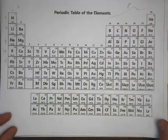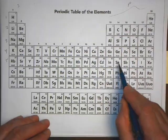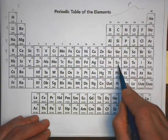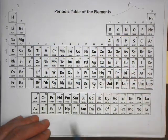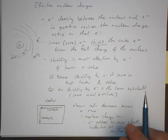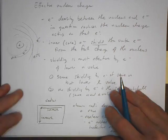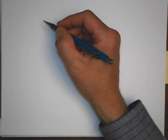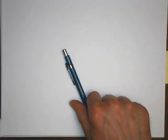So we've looked at atomic radius as a periodic property. Let's look at one more trend — we're going to look at a trend called ionization energy. Actually, we'll start that in the next video.